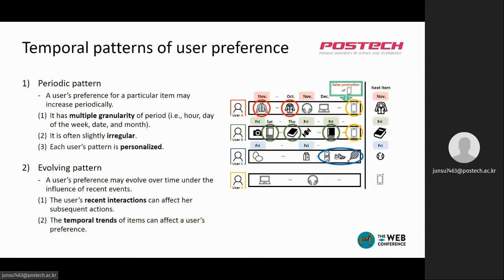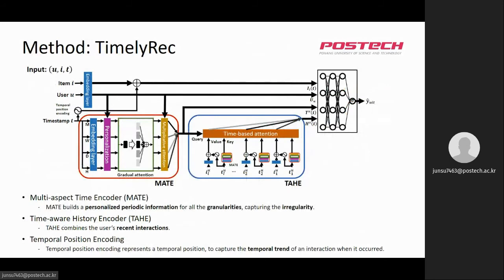These are the several kinds of temporal patterns of user preference and their characteristics, and we argue that time-aware recommender systems should be designed to consider them carefully. In this regard, we propose a novel time-aware recommender system called TimelyRec, which considers each of the temporal patterns we have arranged.